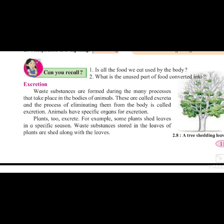Animals have specific organs for excretion. We also have a specific organ for excretion — that organ is called the anus. Plants, however, are not having a specific organ. So how do they excrete? Some plants shed their leaves in specific seasons. If you see at the beginning of winter or during the winter season, a few plants shed their leaves — all the leaves fall off. Plants also excrete through this process, which is called excretion in them. Only animals and human beings have a specific organ for excretion.